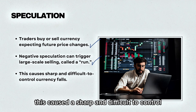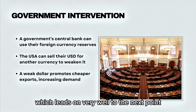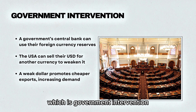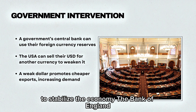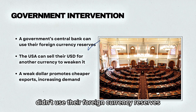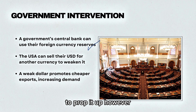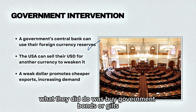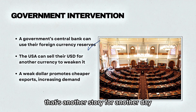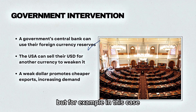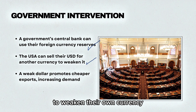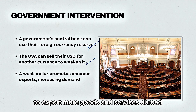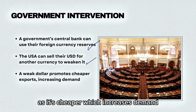This caused a sharp and difficult-to-control currency fall, which leads on to government intervention. A government's central bank can use their foreign currency reserves to stabilize the economy. The Bank of England didn't use their foreign currency reserves to buy the pound back to prop it up — instead they bought government bonds or gilts to stabilize the pound. For example, the US can sell their US dollars for another currency to weaken their own currency, in order to export more goods and services abroad as it's cheaper, which increases demand.